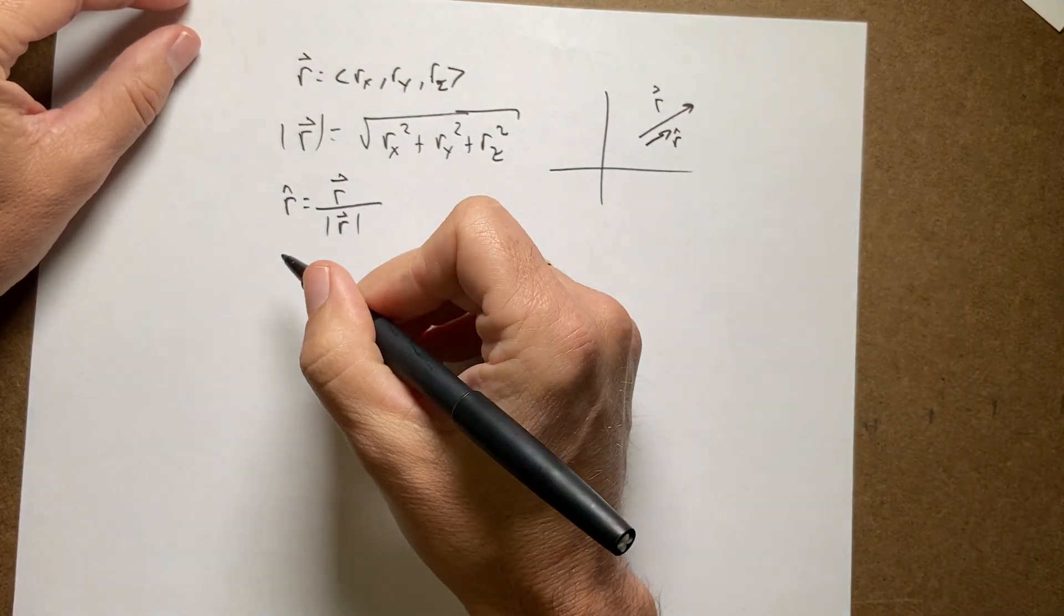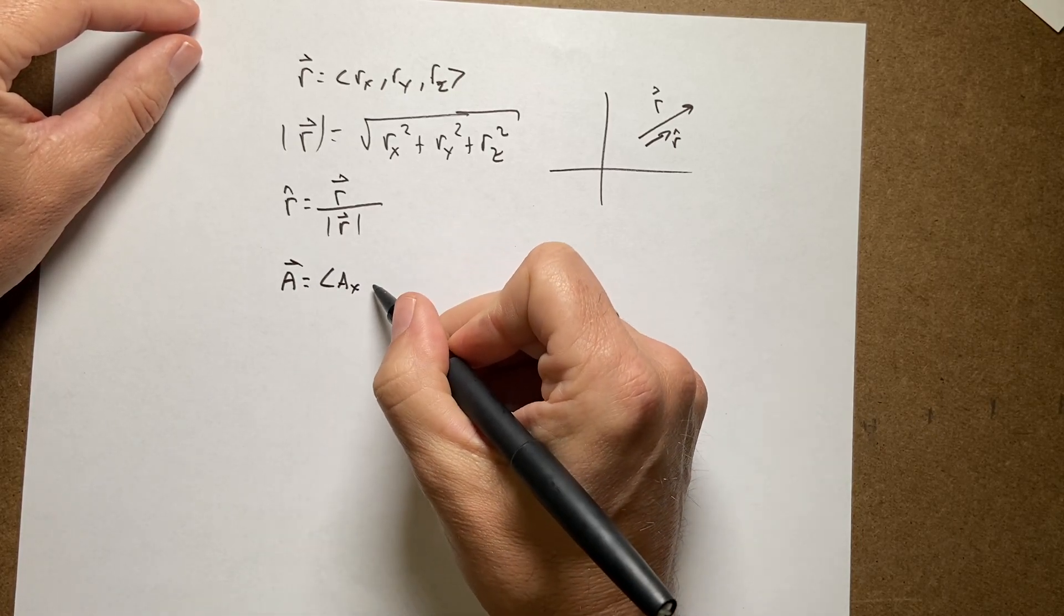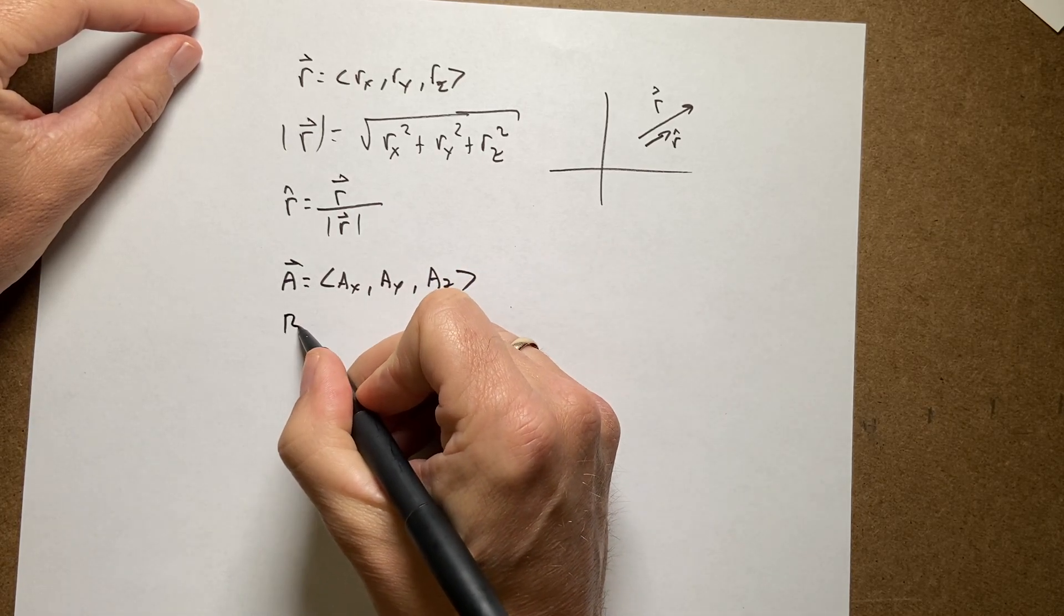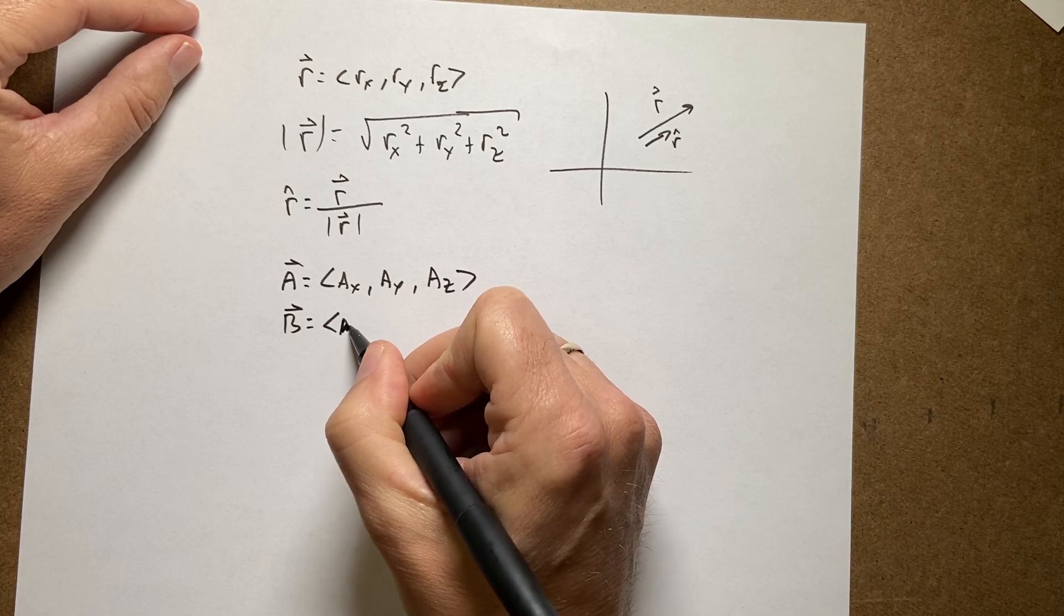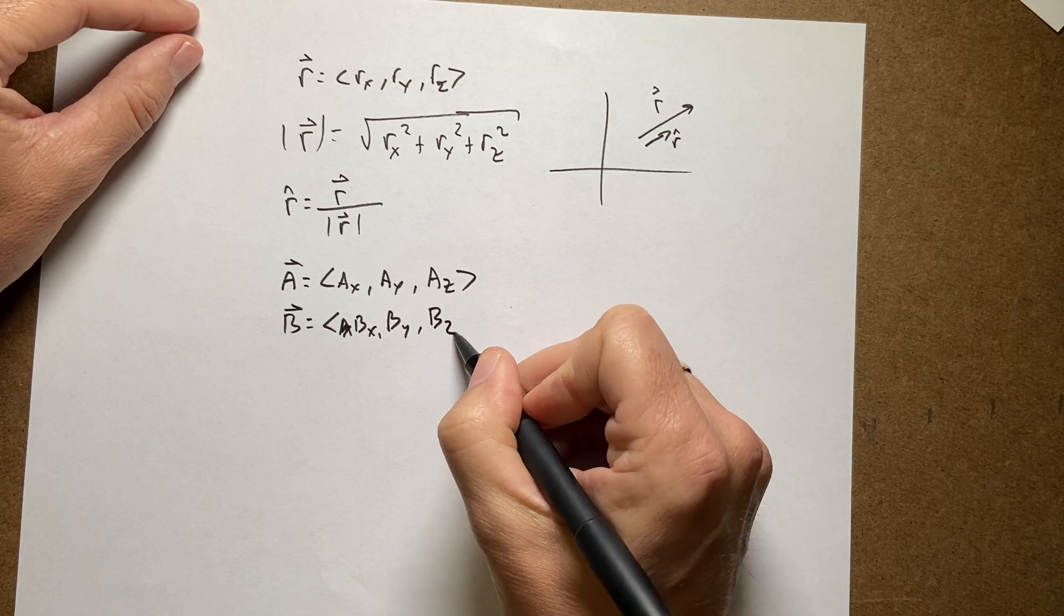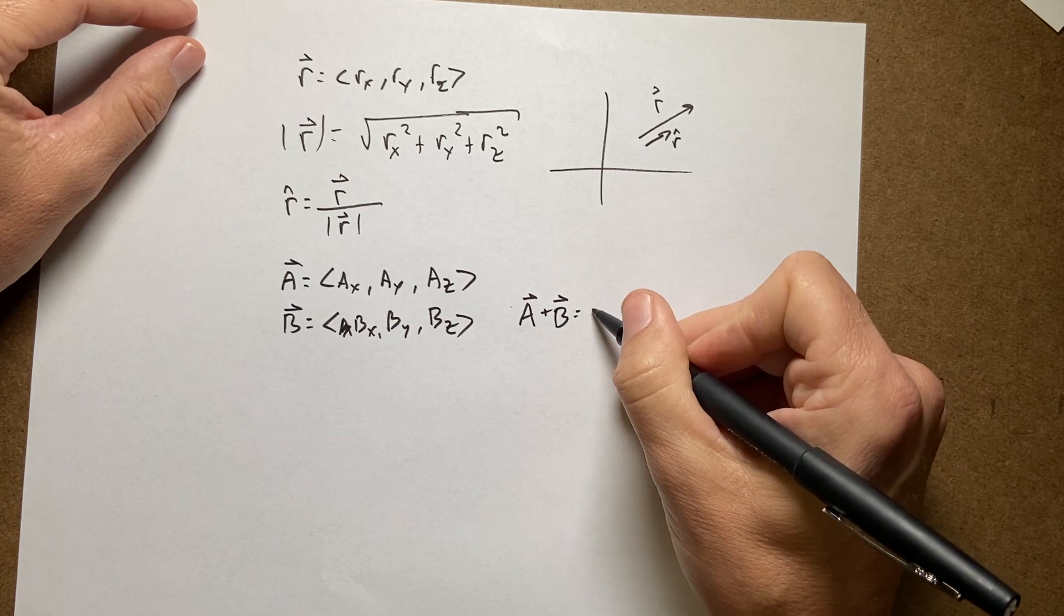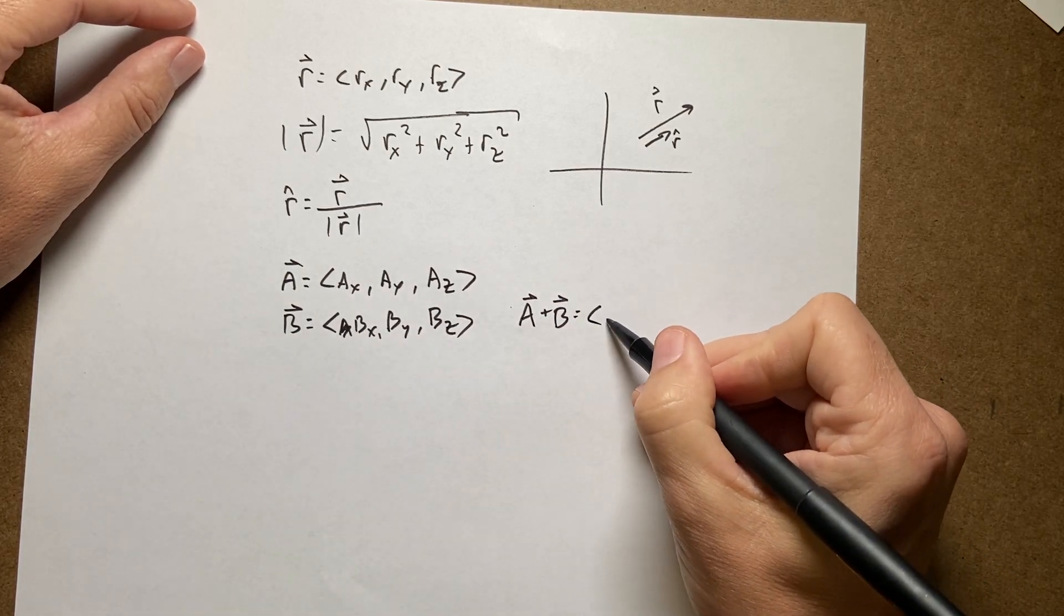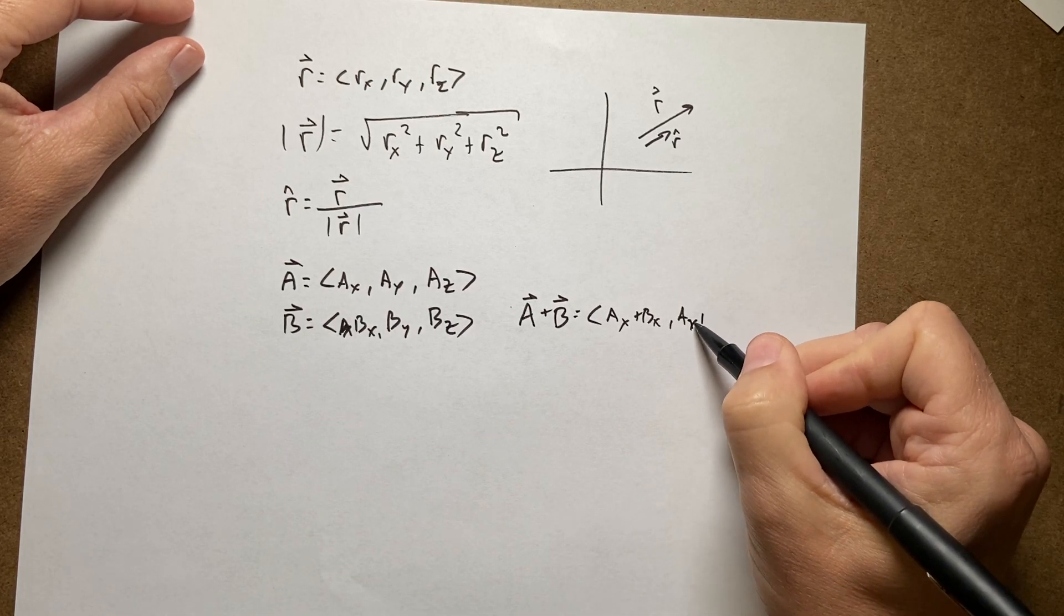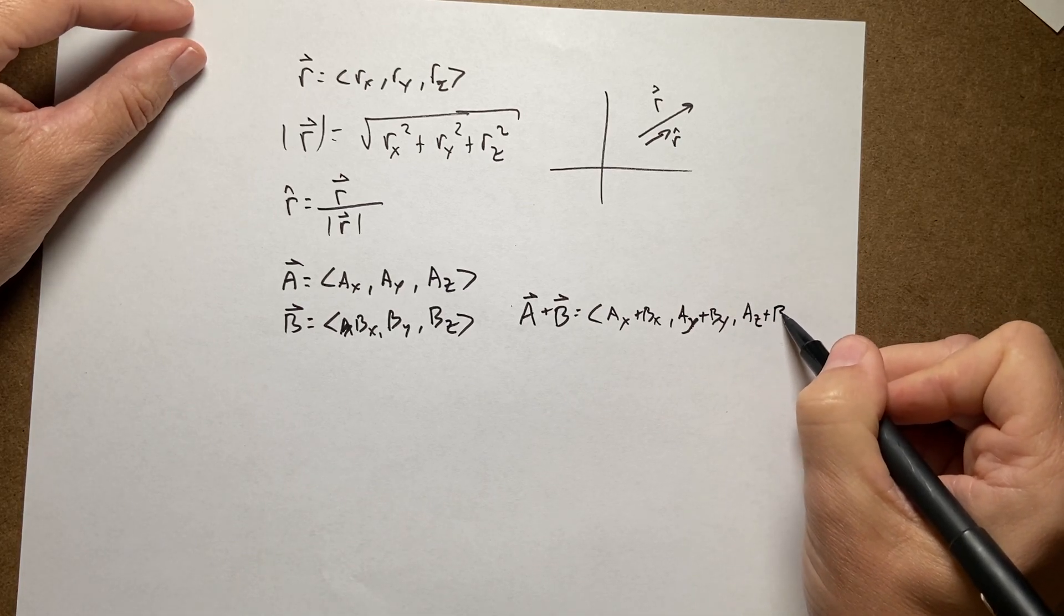What about adding vectors? Let's say I have two vectors. Vector a is ax, ay, az, and b is bx, by, bz. Then a plus b is going to be equal to the sum of the components. So it's going to be ax plus bx, ay plus by, az plus bz.